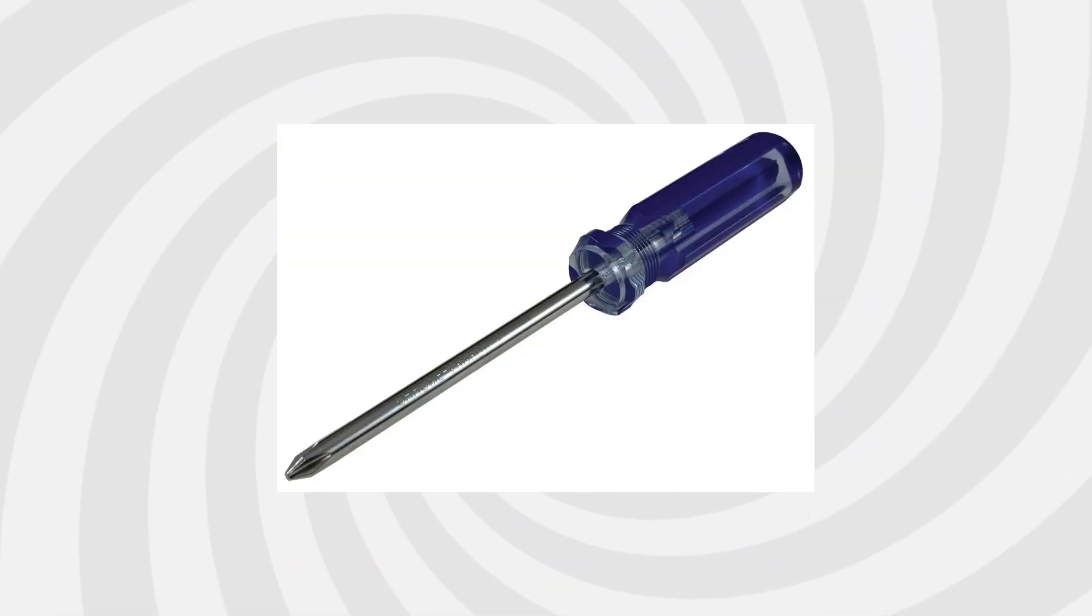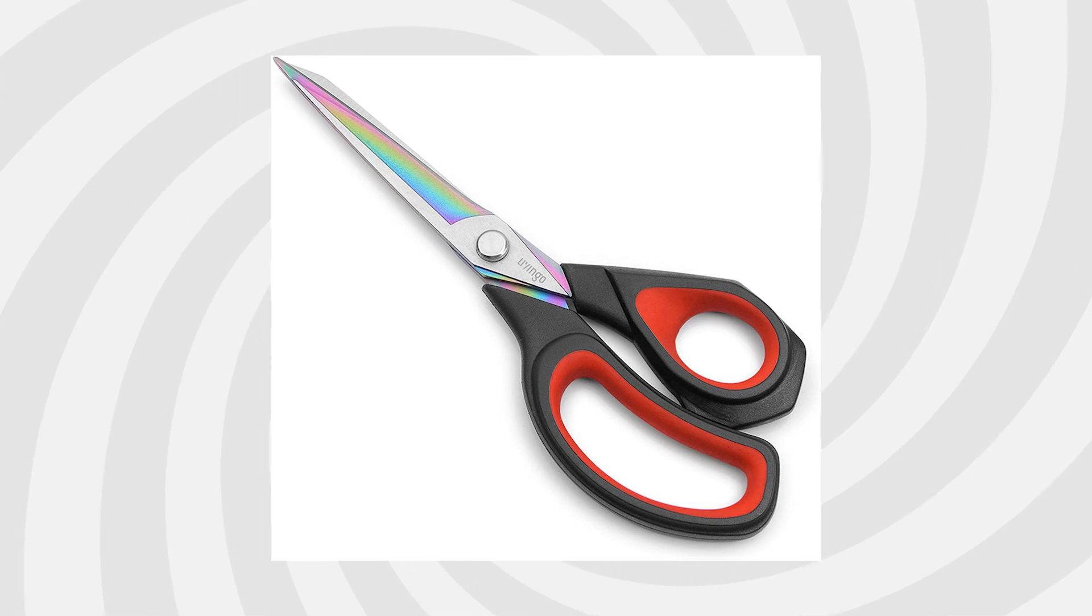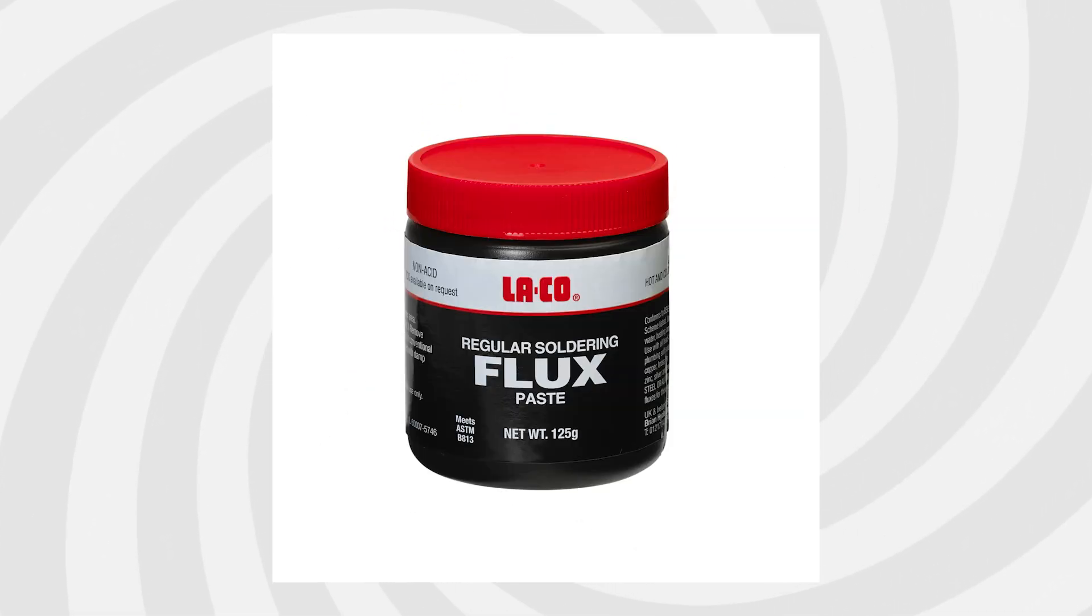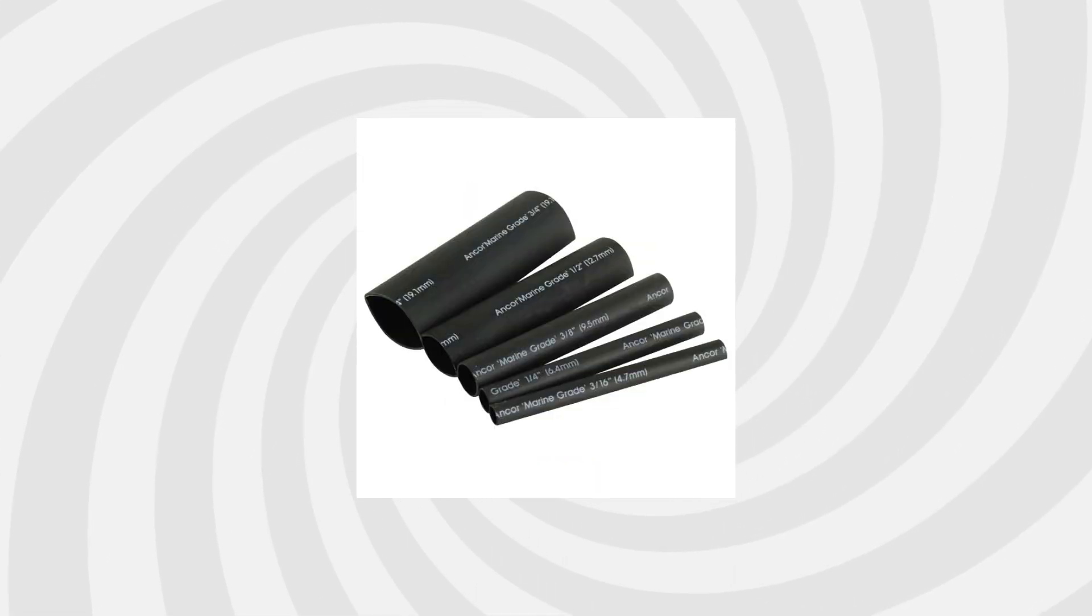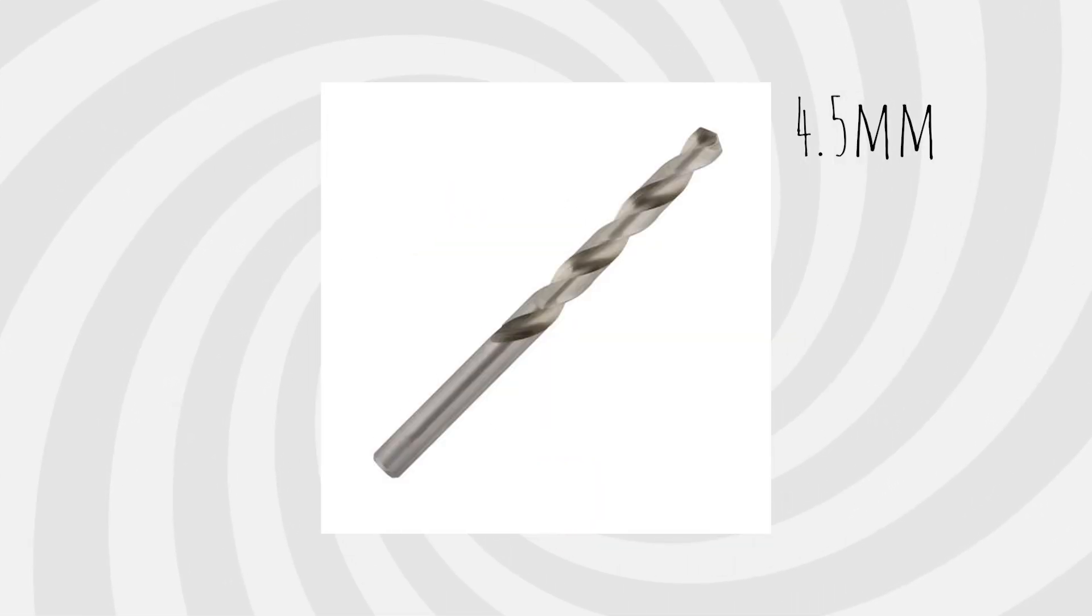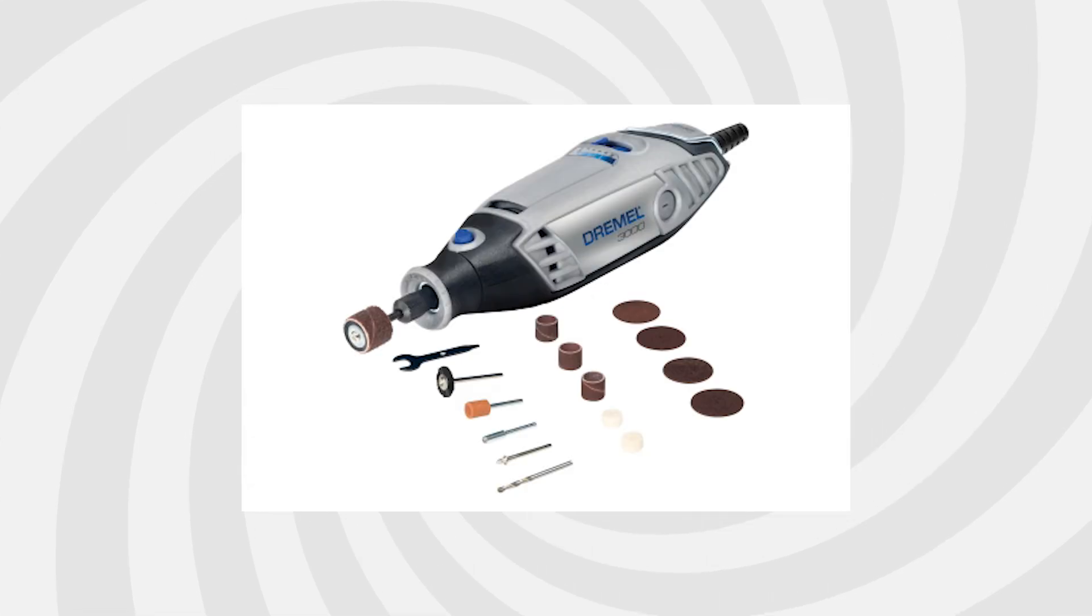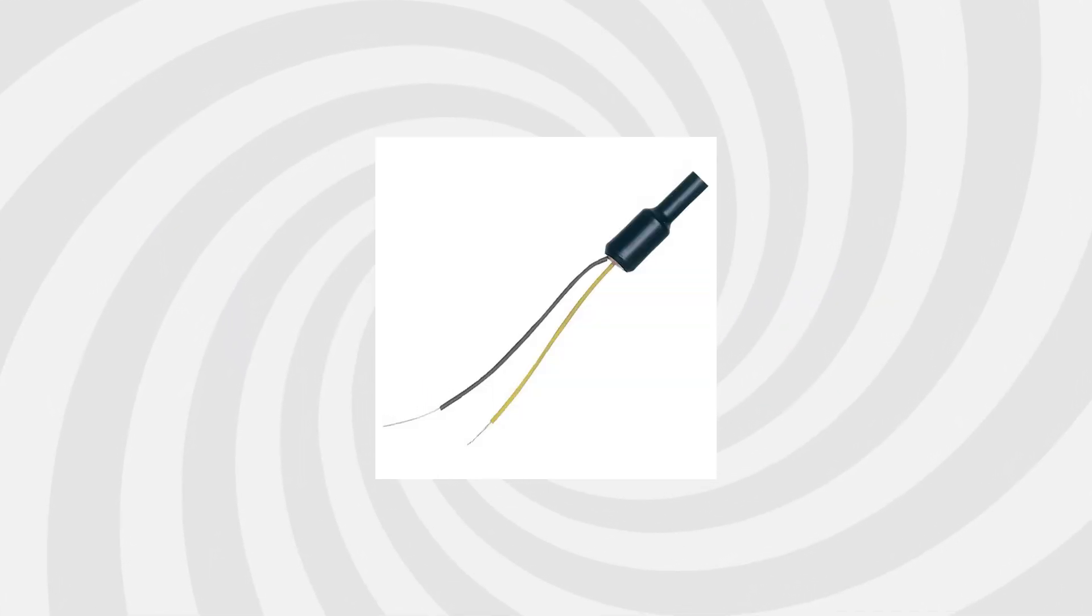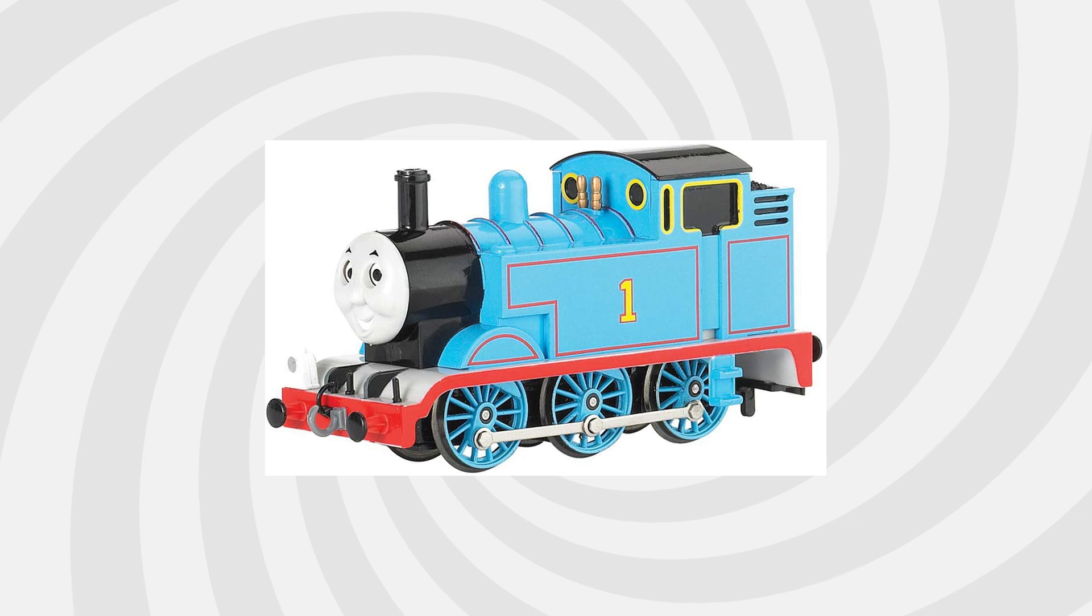For this project, you will need a Phillips head screwdriver, scissors, wire strippers, a soldering iron, flux, solder, heat shrink tubing, a 4.5mm drill bit, a Dremel or something similar to use the 4.5mm drill bit, a DCC decoder, a Soothe 22 smoke unit, and of course, a Bachmann Thomas.